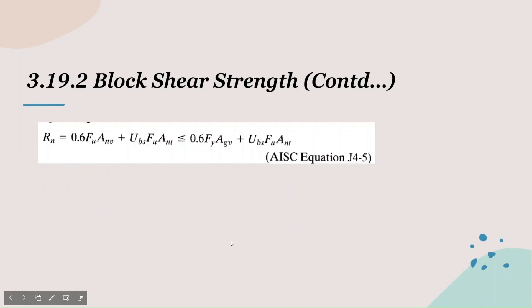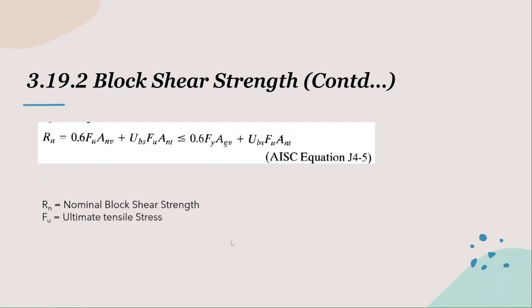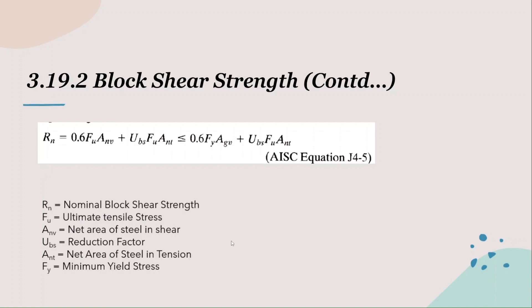Let's see what these terms are. Rn is the nominal block shear strength. Fu is the ultimate tensile stress. ANV is the net area of steel in shear — AN is the net area and V stands for shear. UBS is a reduction factor, which we will discuss shortly. ANT is the net area of steel in tension — T stands for tension. Fy is the minimum yield strength of steel. AGV is the gross area of steel in shear.